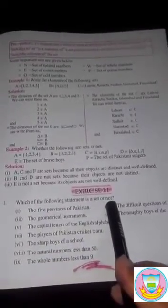Friends, now open your book page number 5. This is our first exercise 1.1 and the first question, which of the following statement is a set or not? We know that a collection of distinct and well-defined objects is called a set.